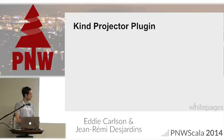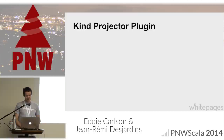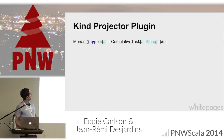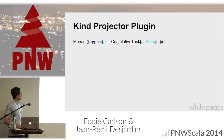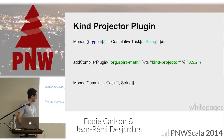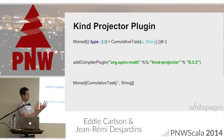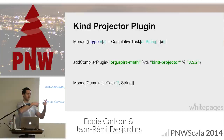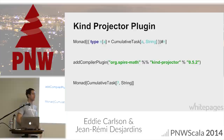There is a better way to do this — the Kind Projector plugin. Adding the compiler plugin allows a much cleaner syntax — instead of the verbose type lambda projection, you get much simpler, easier-to-understand code. You could argue this is even nicer than Haskell because you can partially apply in any order you want, whereas in Haskell you'd have to use flip to reorder arguments.